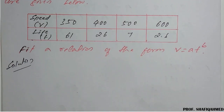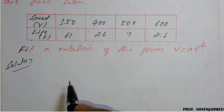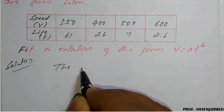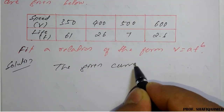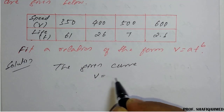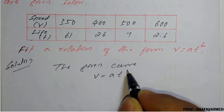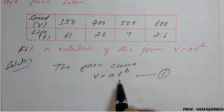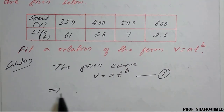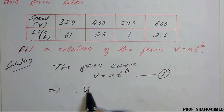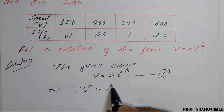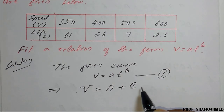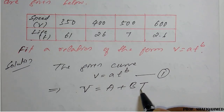To solve this, we write the standard linearized form: capital V = capital A + B · capital T, which is equation 2.